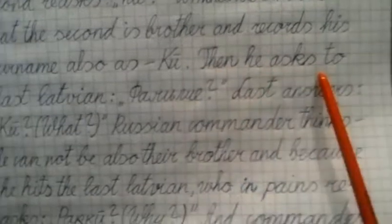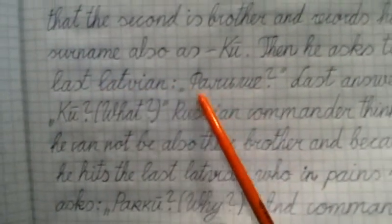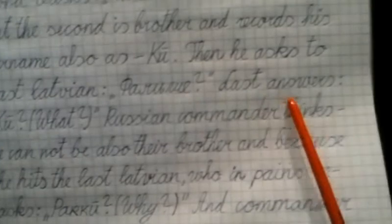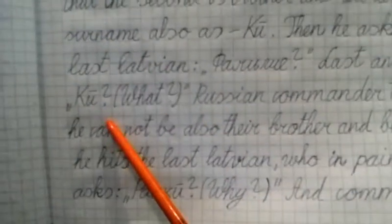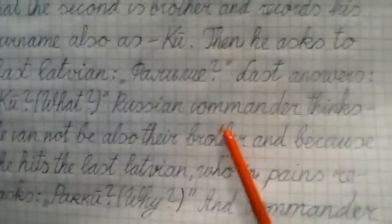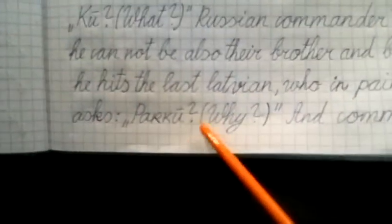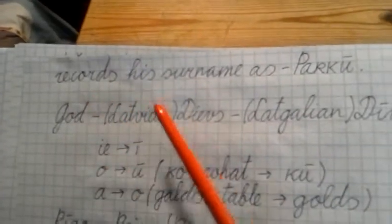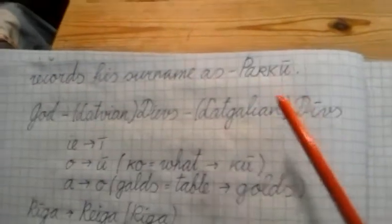Then he asks to last Latvian, Familiya. Last answers kū. Russian commander thinks he cannot be also their brother, and because he hits the last Latvian who in pains asks par kū. And commander records his surname as par kū.